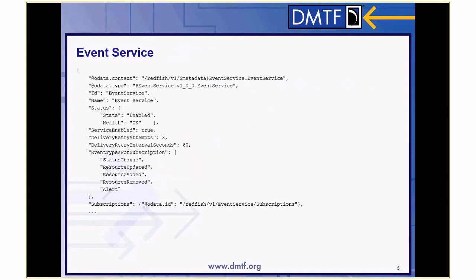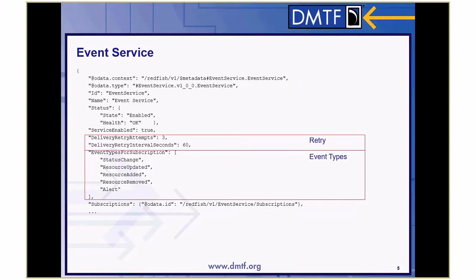Here's what an event service might look like. It's got the normal OData context, type, ID, name, and status that you see on all Redfish objects. The important factors here are retry — we've got retry attempts of three, and the service will try every 60 seconds, three times, if they fail. The event types that you could subscribe to are all listed there, and then the subscriptions collection itself — that's the URI that you would POST the event destination to.